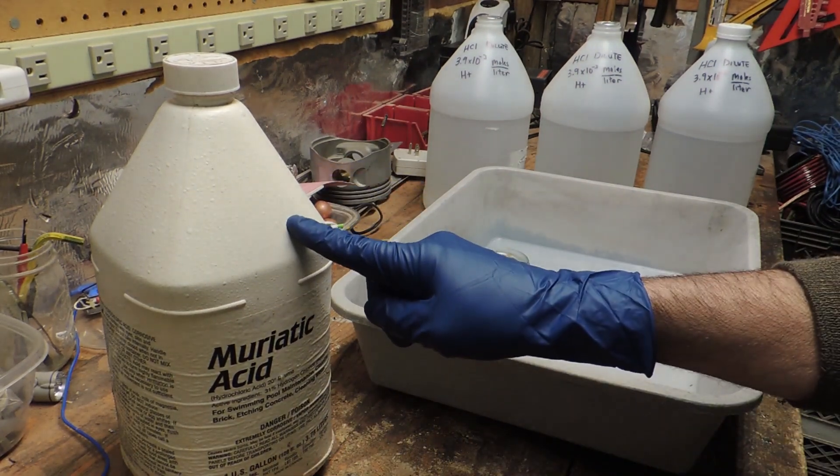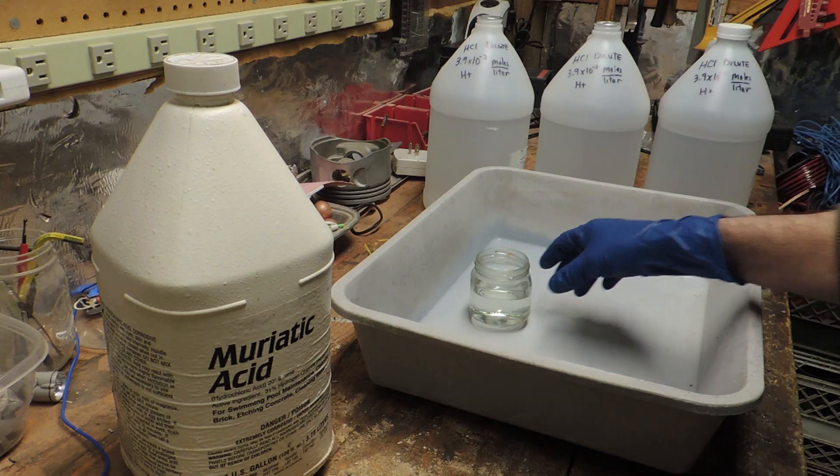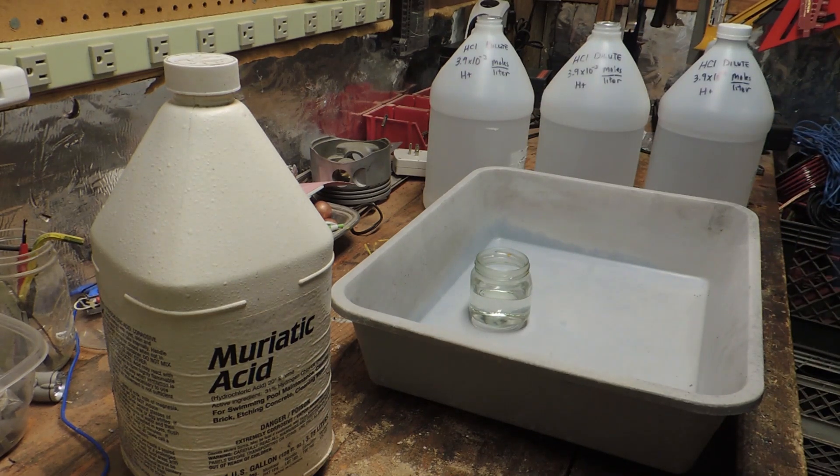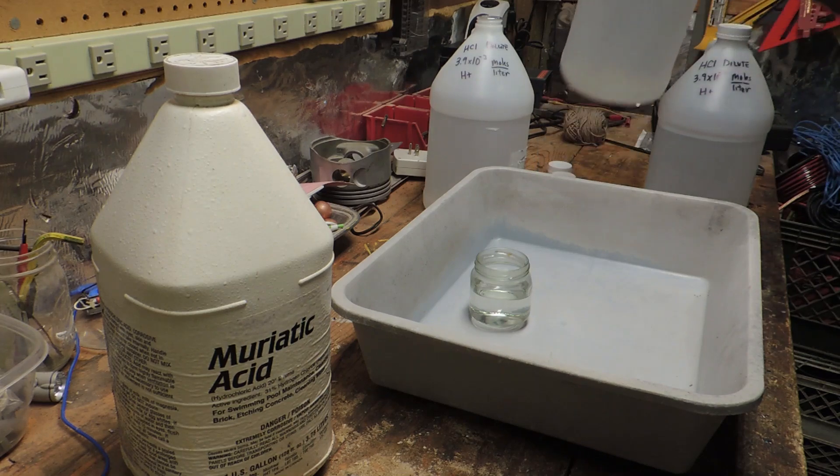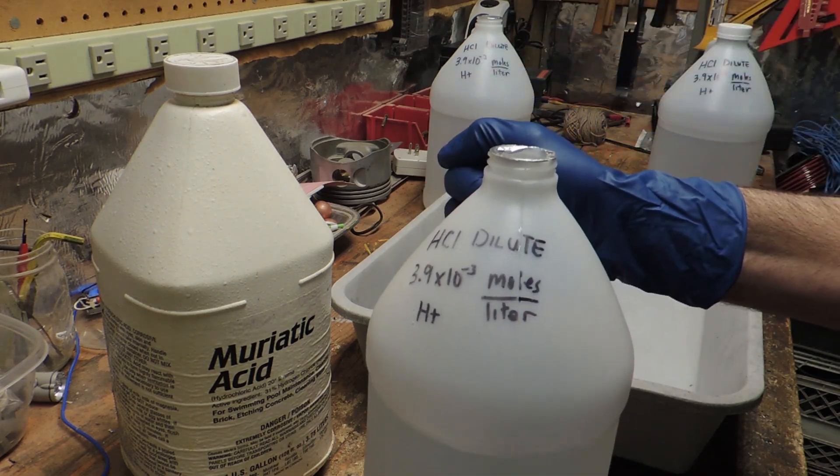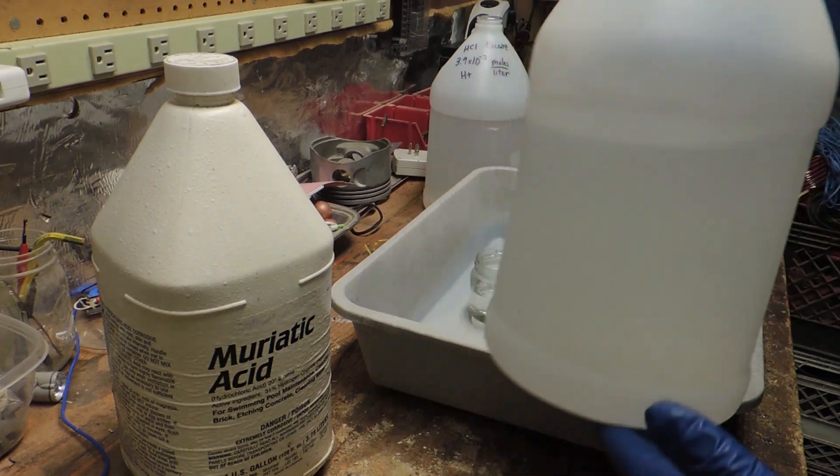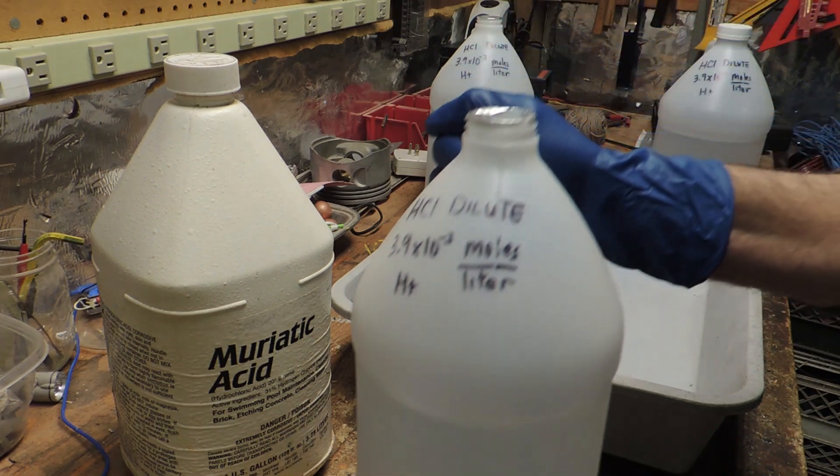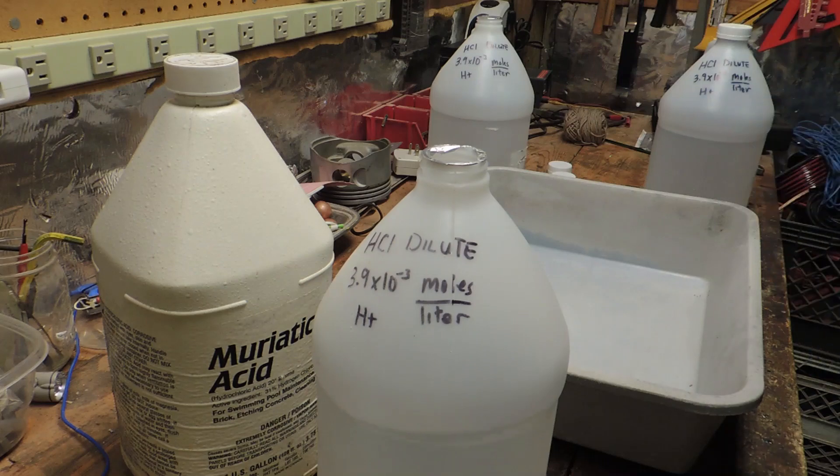I've taken some of the muriatic acid and I put it in a small glass vial. I have a containment area just in case there's a spill and so all you have to do is take your water. Now this is an old windshield washer jug and I filled it two-thirds of the way up with clean water and now we're ready to make the dilution.